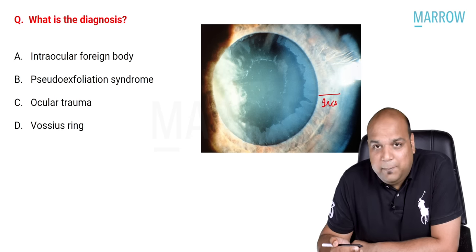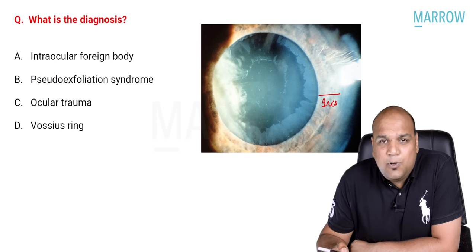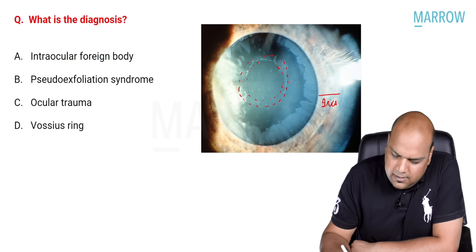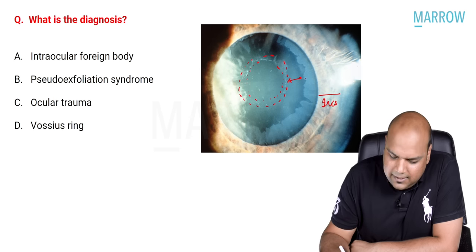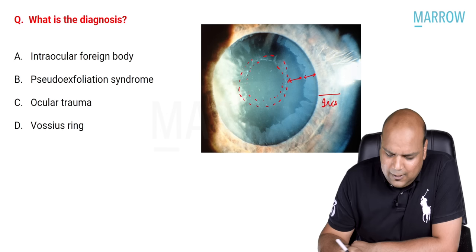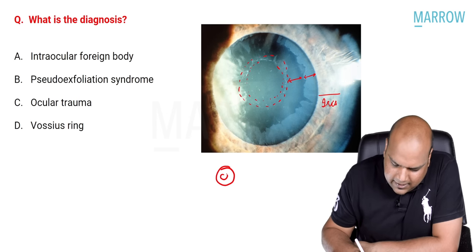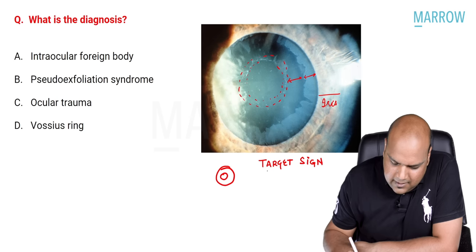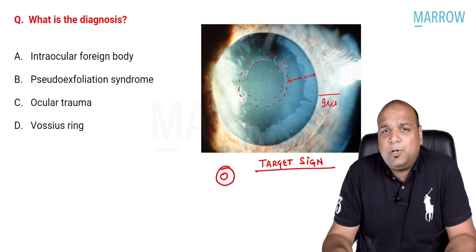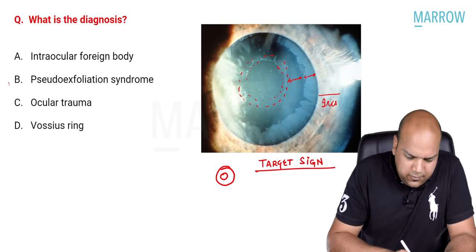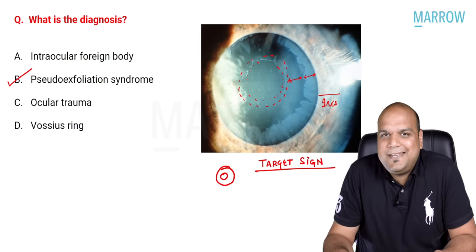On the lens, what abnormality can we see? On the lens we can see a central disc of whitish deposit, then a clear area, and then peripherally a band of deposit. So: a disc of deposition, a clear area, and a band — it looks like a dart game, a ring then another ring. This is called the target sign.